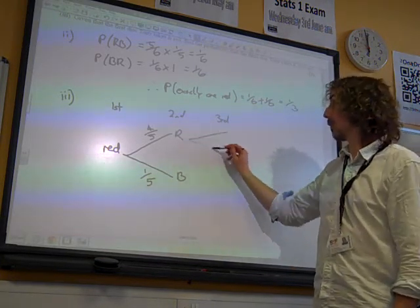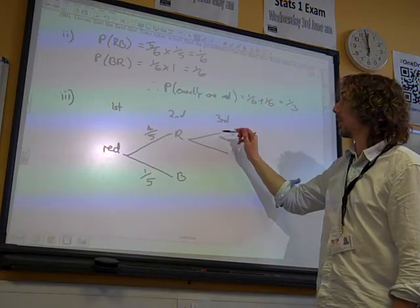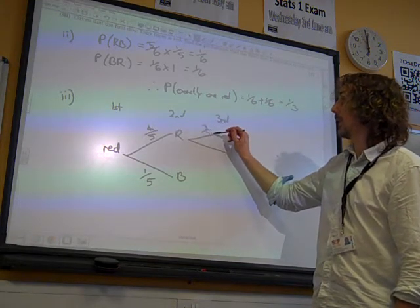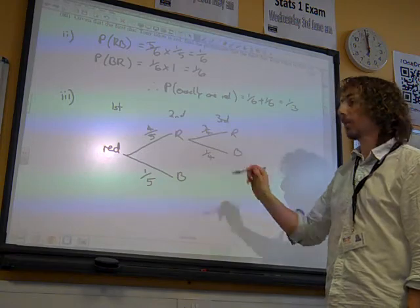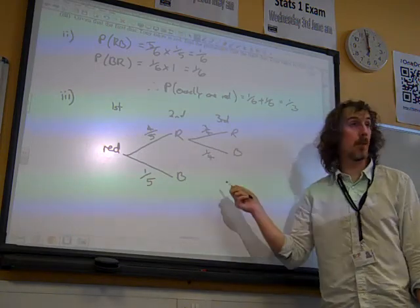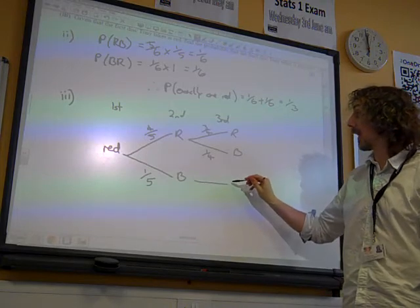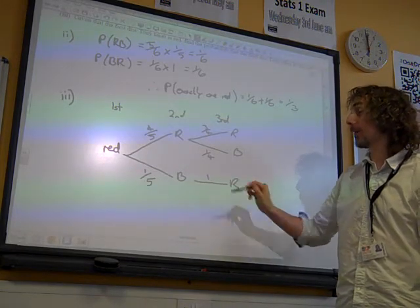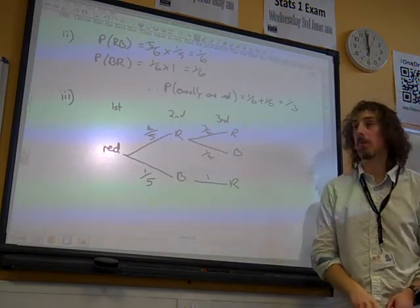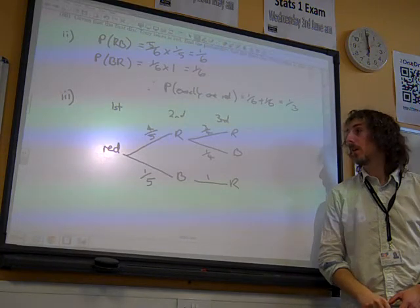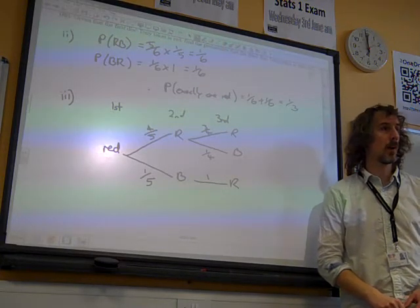Here, it could still be red or black. Three quarters of them are red, one quarter black. Here, we don't have a choice anymore. The only black disc has been removed. So the third disc has to be red with probability one. Again, certain that the third disc was red there. So that's what our new situation looked like.